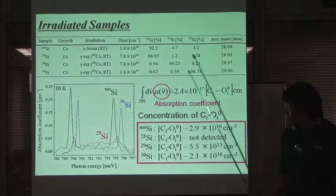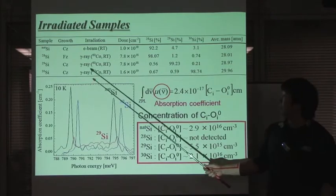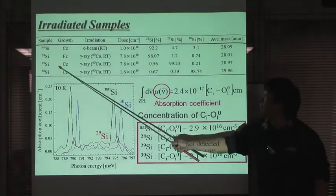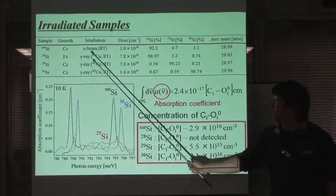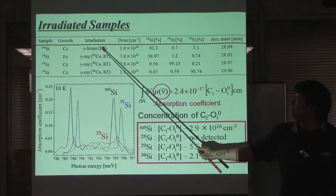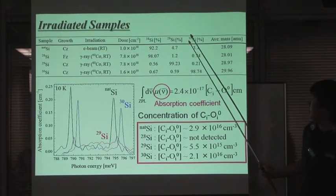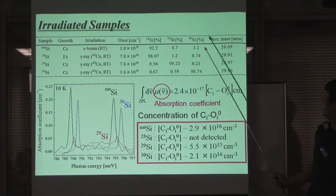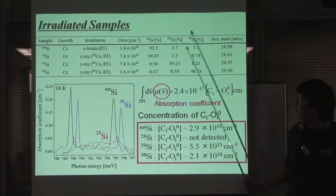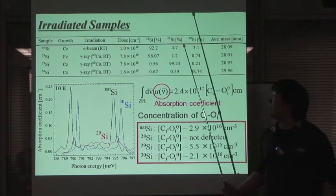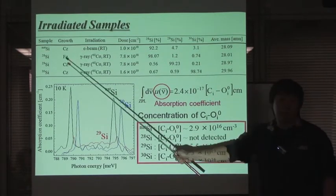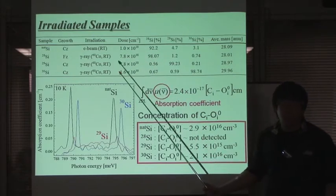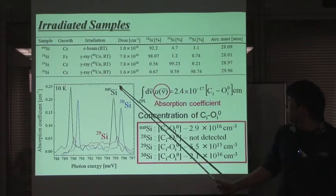This slide shows the four samples we used. This table indicates sample information such as growth type, kind of irradiation, isotopic composition of silicon, and average mass. For creating carbon-oxygen defects, these samples were irradiated by either an electron beam or a gamma ray at room temperature.